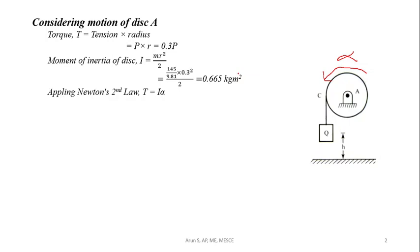Applying Newton's second law, torque equals I alpha. T equals 0.3P, so 0.3P equals I times alpha. Substituting alpha equals A by 0.3, we get P equals 0.39A, establishing the relationship between tension and acceleration.